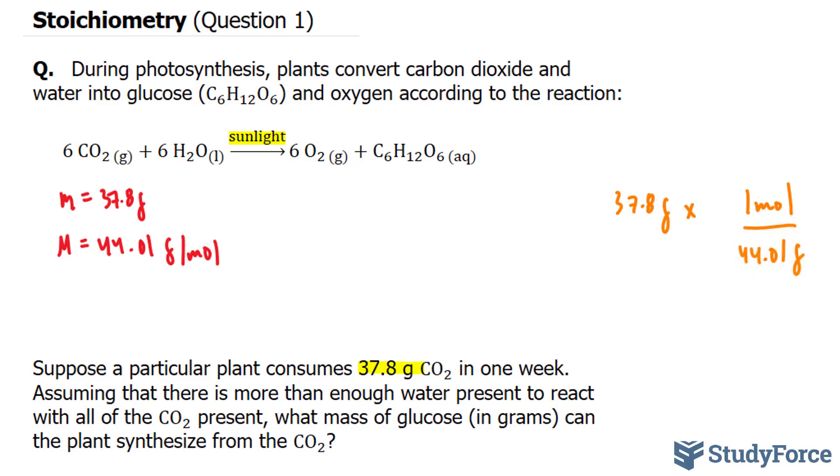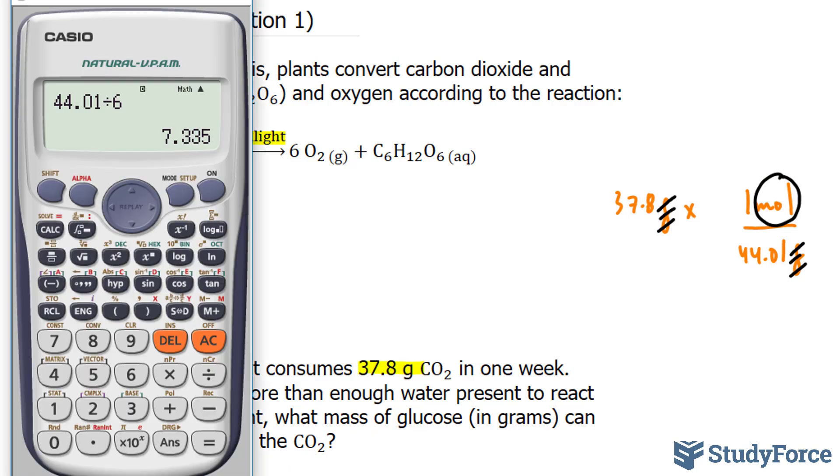And you can do that for any rate. This is considered a rate because we have one unit on top of another unit. So this grams unit will cancel out, leaving us with only moles. Using our calculator, we have 37.8 divided by 44.01. And this gives me 0.8588.